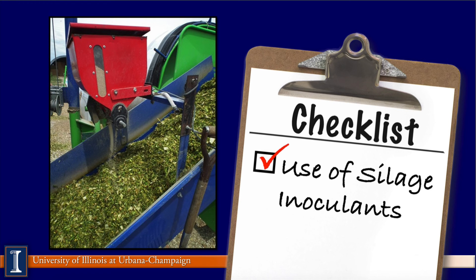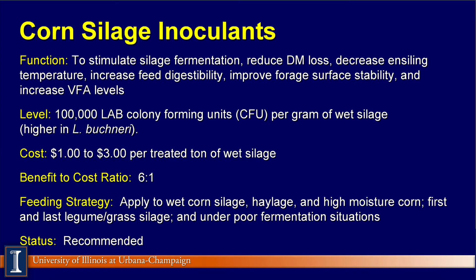Looking at the silage checklist as we summarize: the function of silage inoculants, the CFU levels you want — with lactobacillus buchneri typically about four times higher — and cost depending on the product, generally $1 to $3 per ton. The benefit-to-cost ratio I settle on is 6 to 1, depending on milk production responses. Strategy: apply to all wet silages, haylages, corn silages, and high moisture corn — especially first and last cutting, where natural bacteria may be reduced due to wet growing conditions or frost damage, and in situations where we expect poor fermentation.